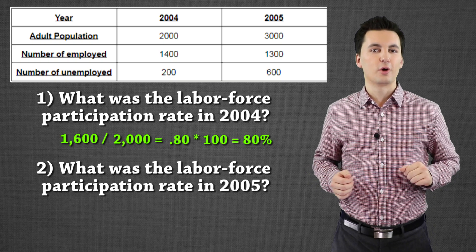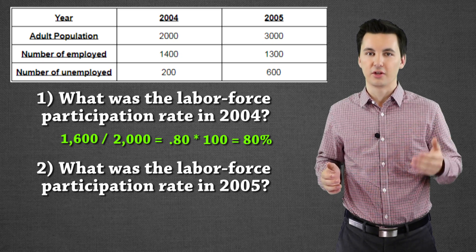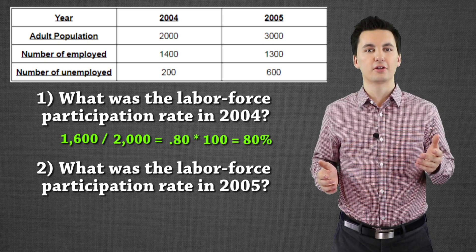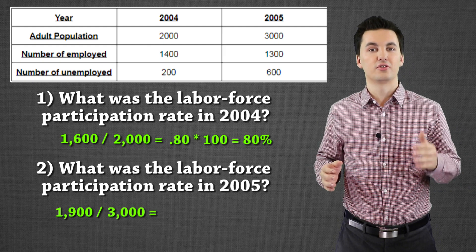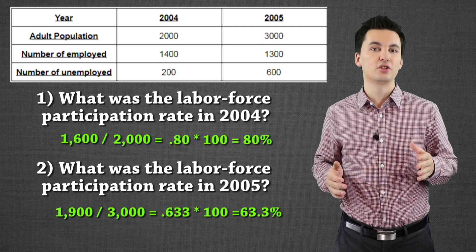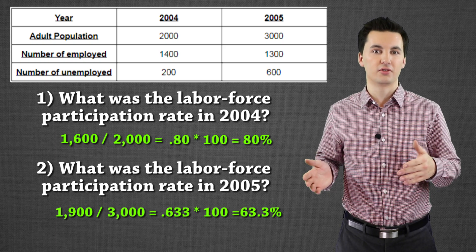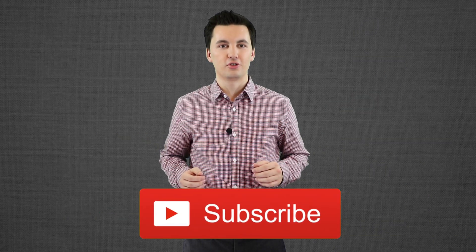The second question asks for 2005. We do the exact same thing: take employed plus unemployed, then divide by the adult population. For 2005, we're dividing 1,900 by 3,000, which gives us 63.33 percent. Not as good — only 63.3 percent of our population are working. There might be other issues at play causing this number to drop, and that could be a concern for society. Hopefully you now have a good understanding of how to find the labor force participation rate and the unemployment rate, and what these numbers truly mean.